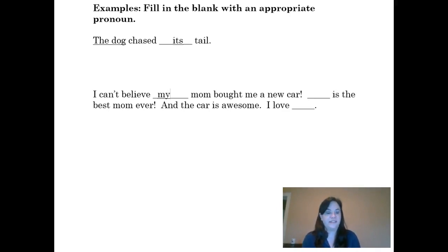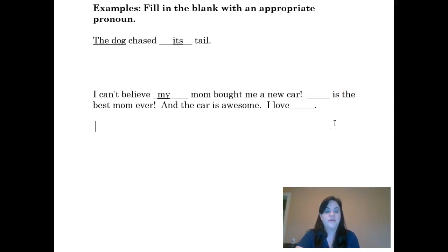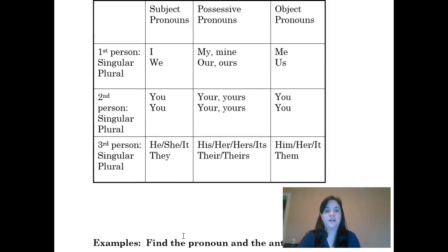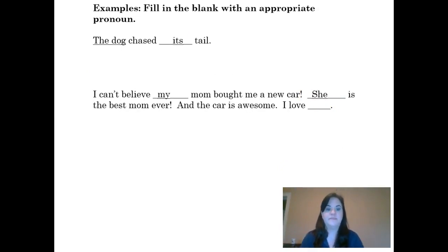Then we have the next sentence: '___ is the best mom ever.' Here I need a subject pronoun because the sentence has no subject without the blank. I need to figure out who I'm referring to — who is the best mom ever? Mom is the best mom ever, so my antecedent is 'mom.' Mom is singular, we're talking about someone else, and mom is a female. So I need a singular third-person subject pronoun that refers to a female. That pronoun is 'she.' We would say: 'She is the best mom ever.'